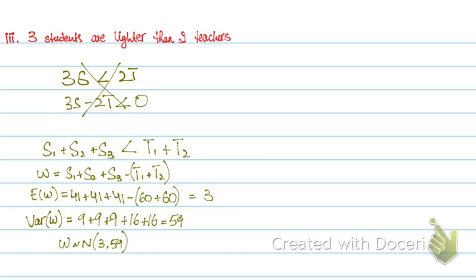Now you have to find the probability of W less than 0. This is how you do a question where it talks about independent items. The 3 students are independent — it's not just 1 student whose weight is being multiplied by 3. These are 3 different students and 2 different teachers. In that case, you have to be alert on how to approach a question of this kind.